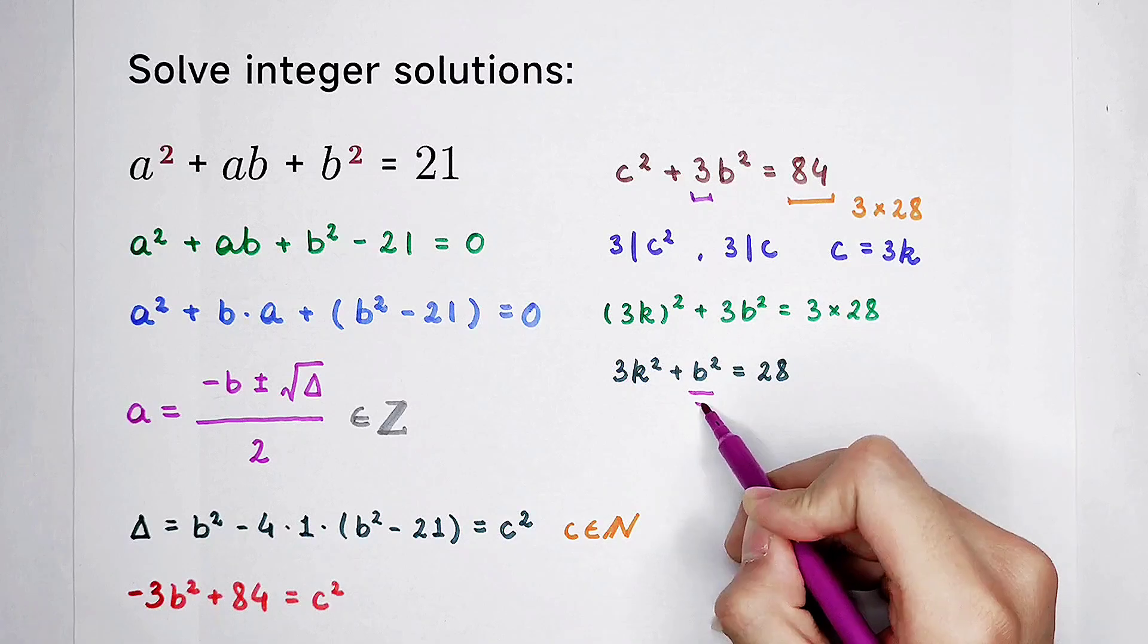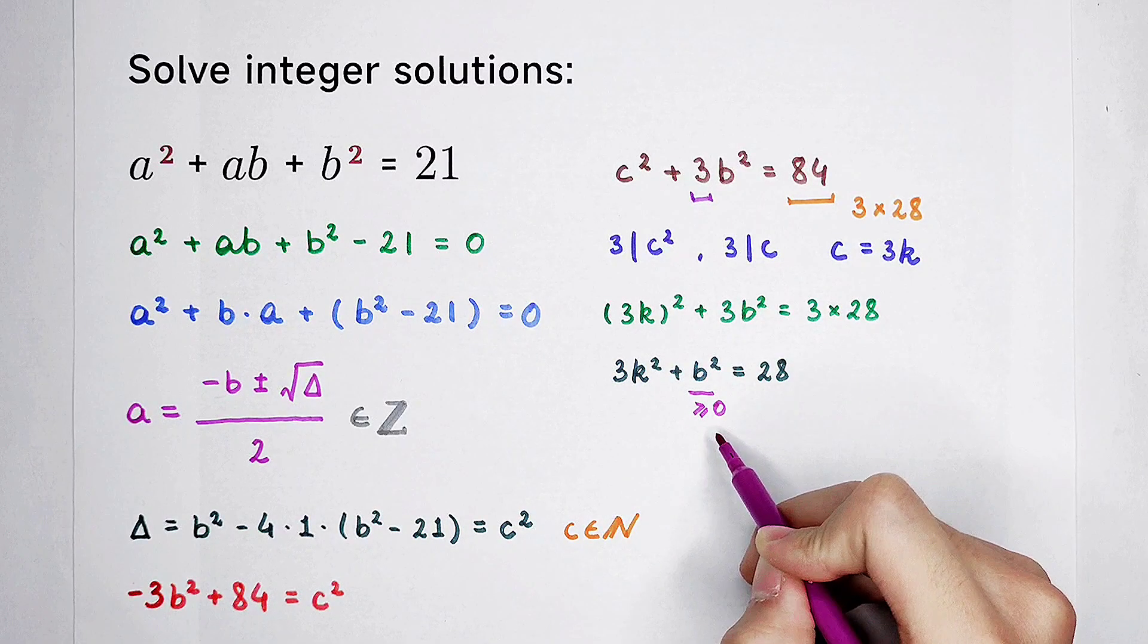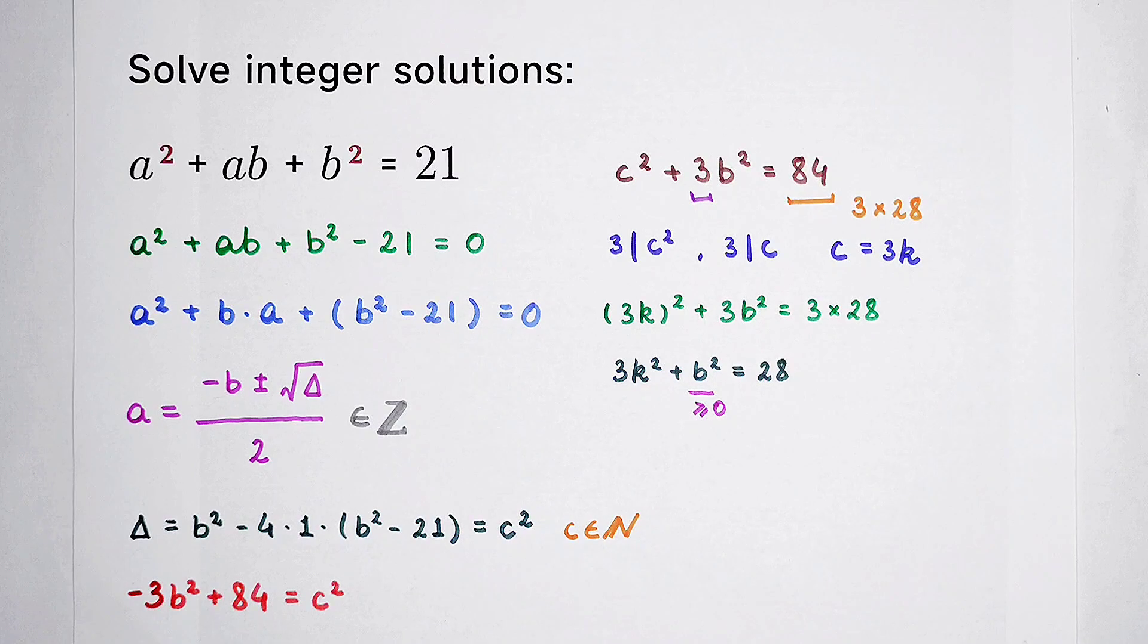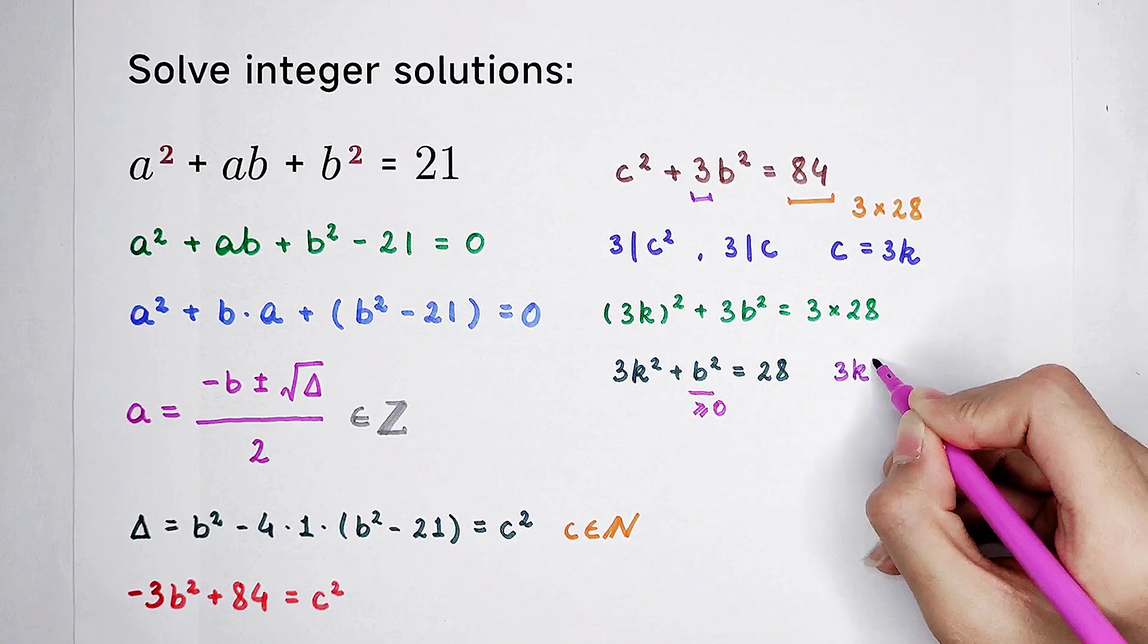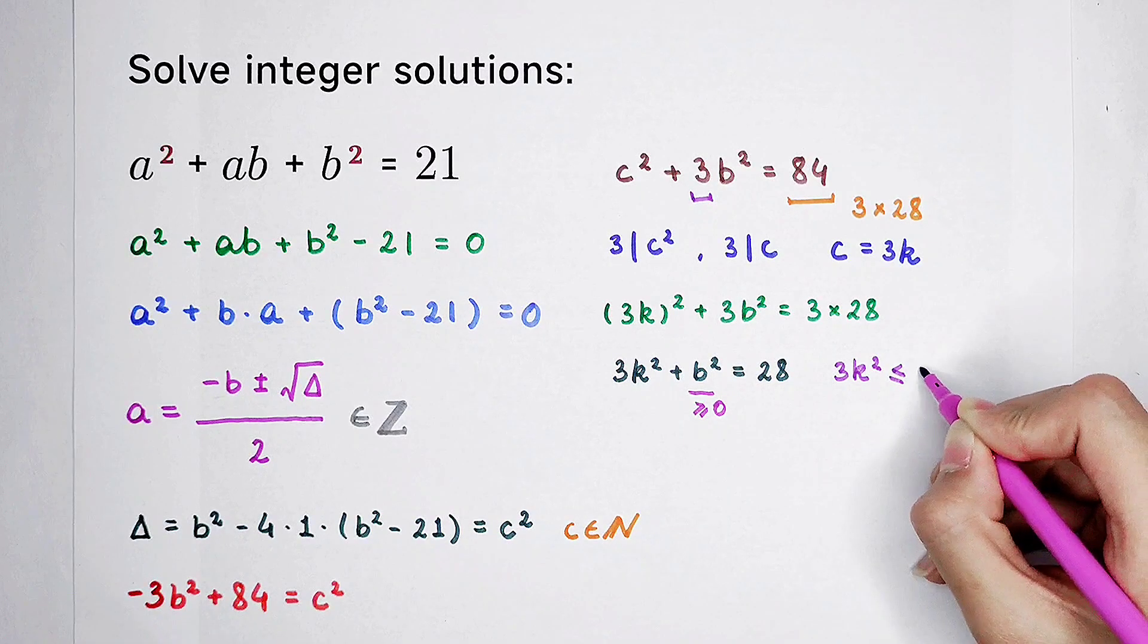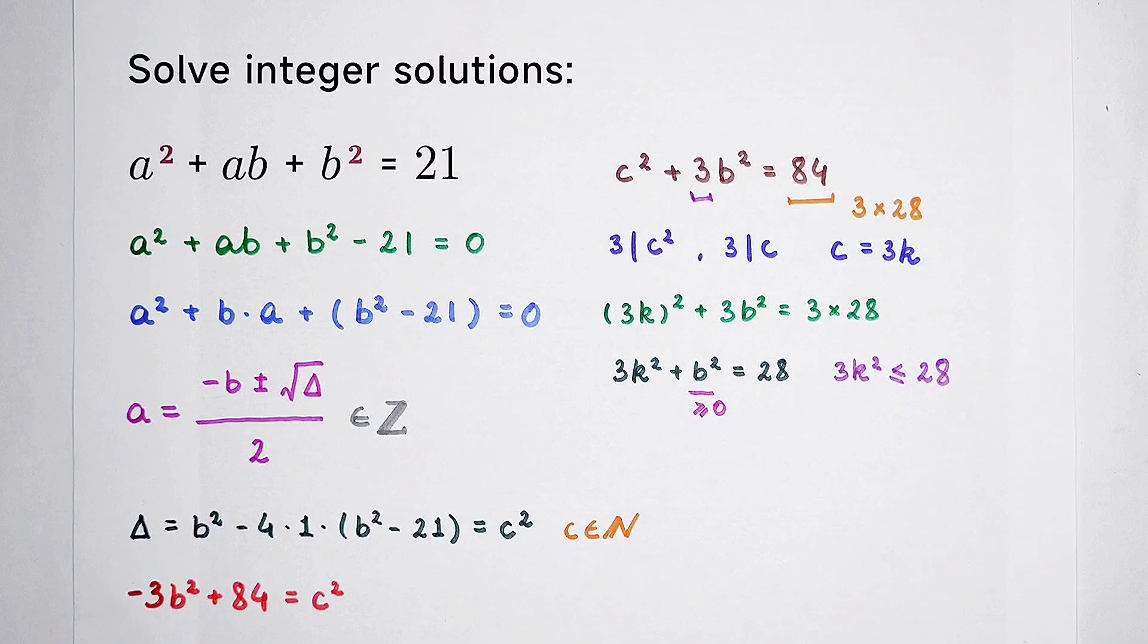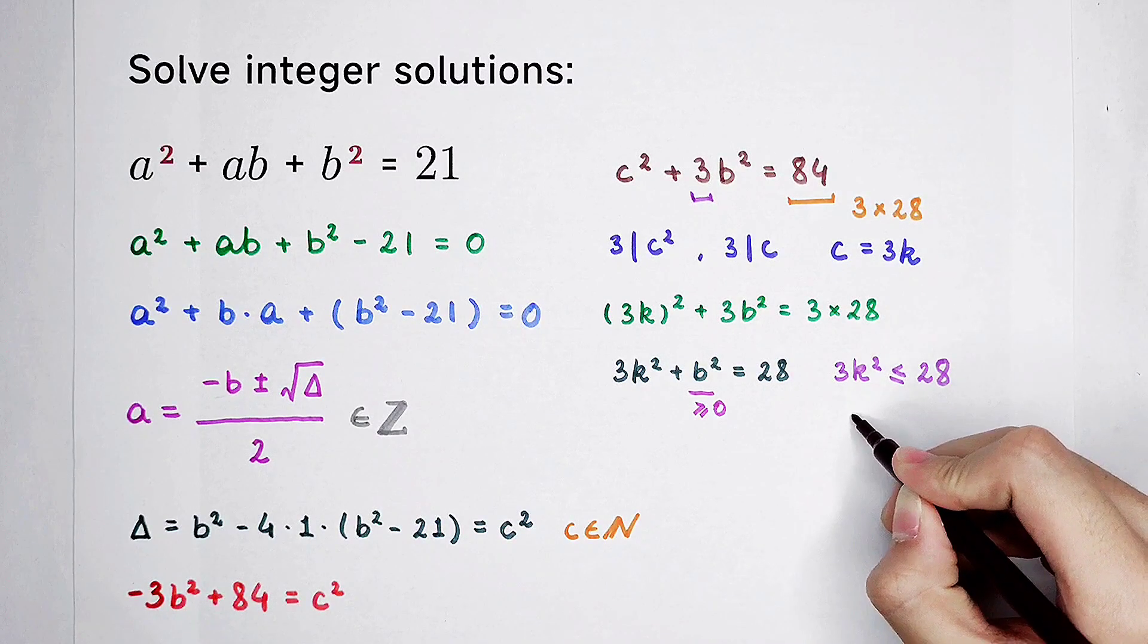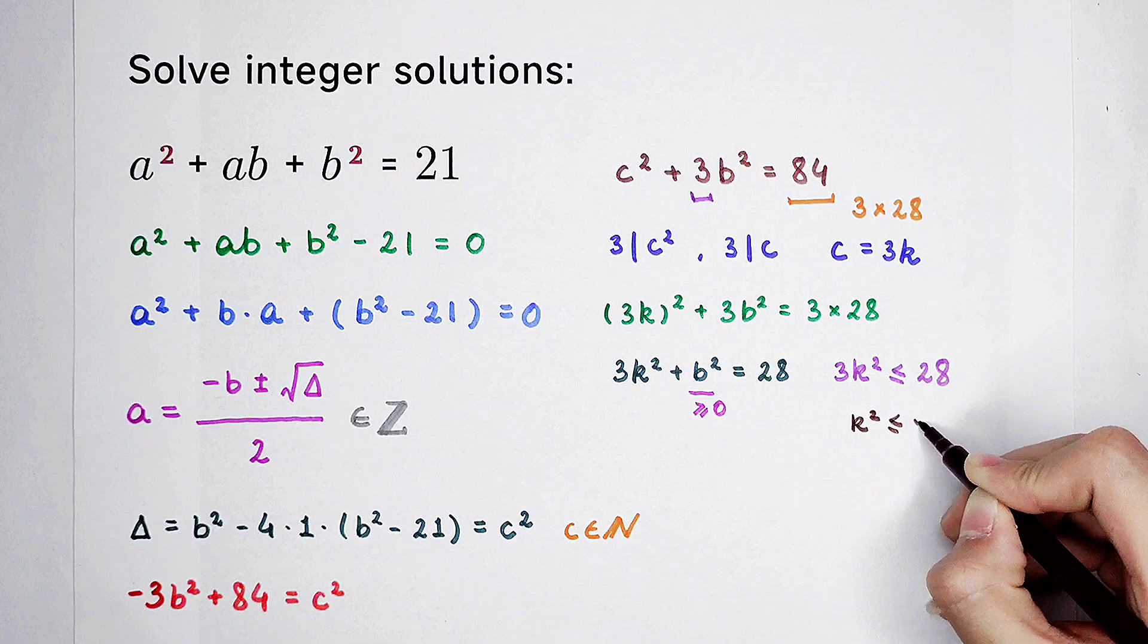Then, 3k squared. It should be smaller than or equal to 28. Solve this inequality. We can get that k squared. It should be smaller than or equal to 9.